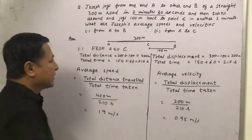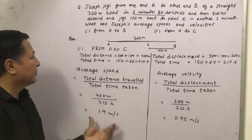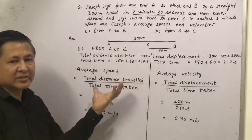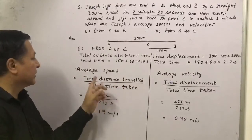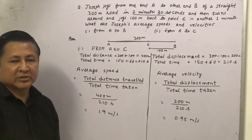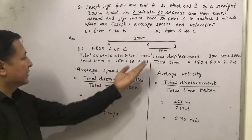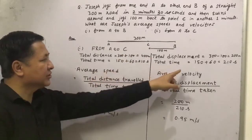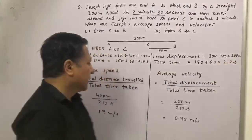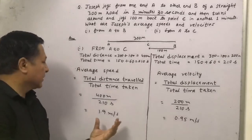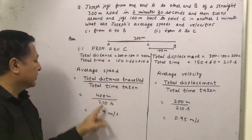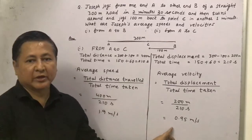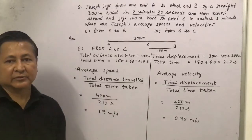As you can see, in the previous case from A to B the distance and displacement were the same, therefore the average speed and average velocity were also the same. But when Joseph returns back, the displacement changes to 200m. The total average speed is 1.9 m/s and the average velocity is 0.95 m/s.